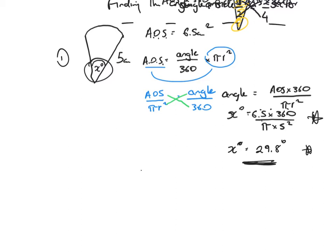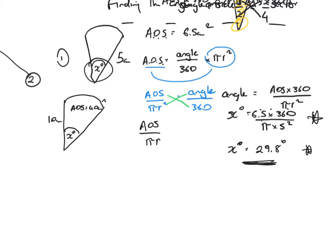Make sure you've got a scientific calculator. Now example two. We've got a sector again, the angle is x degrees, the radius this time is 10 centimeters, and the area of the sector is 40 square centimeters. We can cut straight to the formula: area of the sector over pi r squared equals angle over 360. So 40 over pi times 10 squared equals angle over 360.